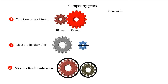Now for gear ratio. If we compare the number of teeth, we get a ratio. In this case, it is either 1 to 2 or 2 to 1, depending on which one is the driver gear, which I will explain coming up.